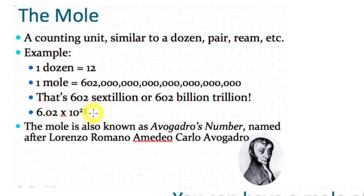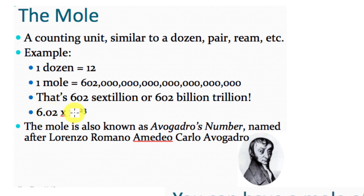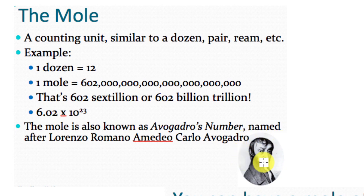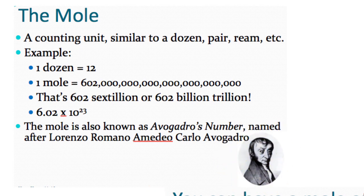We write it in scientific notation: 6.02 × 10²³. You're going to see this number quite a bit — it's known as Avogadro's number. I'll use that term frequently instead of constantly saying '6.02 times 10 to the 23rd.' It's called Avogadro's number because Lorenzo Romano Amedeo Carlo Avogadro came up with the concept of using quantities to count particles.